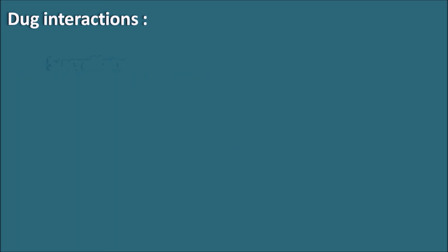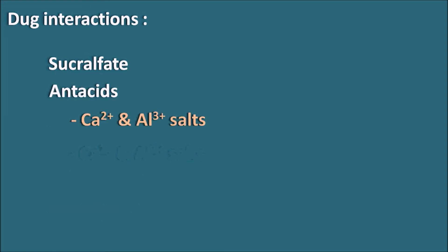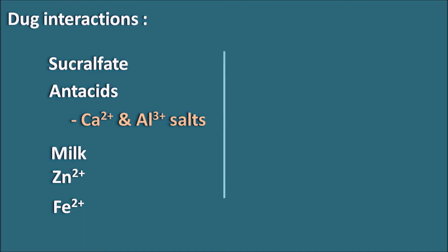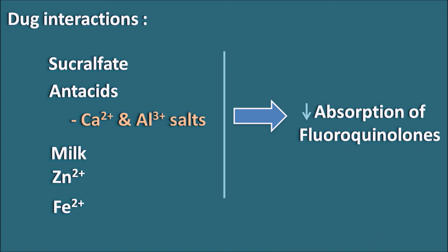Another important drug interaction is observed with sucralfate and antacids containing calcium and aluminum salts, milk which also contains calcium, and zinc and iron preparations. Most of these divalent and trivalent cations can interact with fluoroquinolones to form a complex and inhibit their absorption. This is not a clinically significant interaction, but the bioavailability of fluoroquinolones is reduced with these types of drugs.